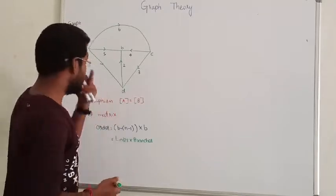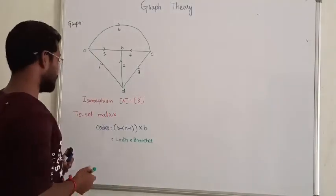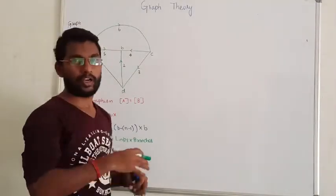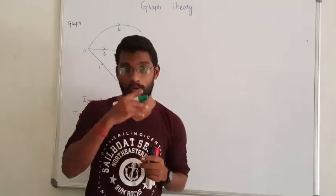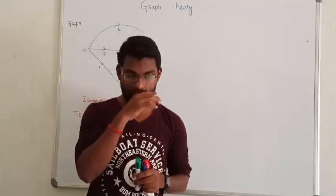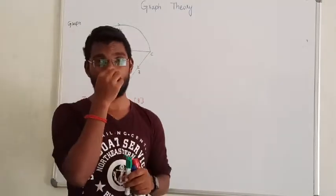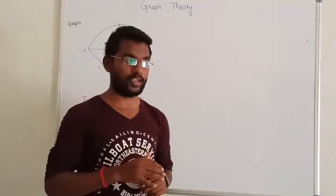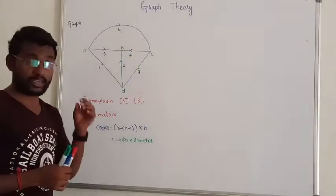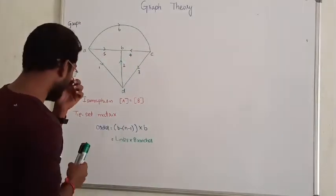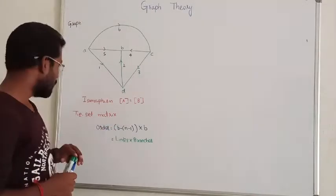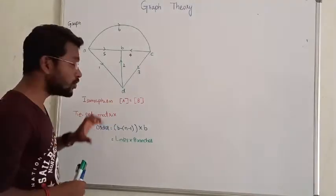Hello guys. Next we are going to discuss about the incidence matrix. We are going to talk about incident matrix, reduced incident matrix, twigs, co-twigs, etc. We are going to talk about this matrix. The last concept is called isomorphism.